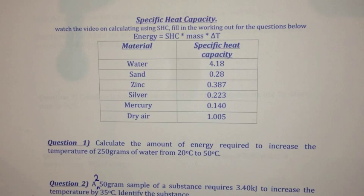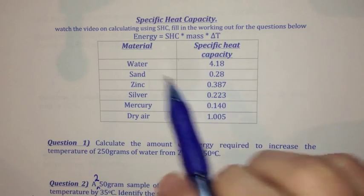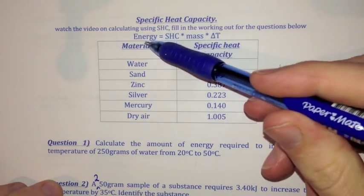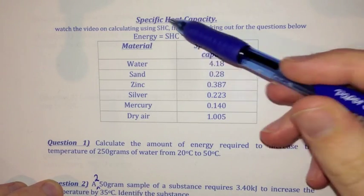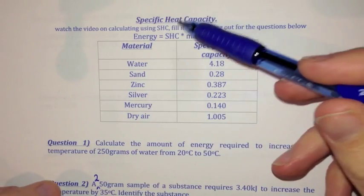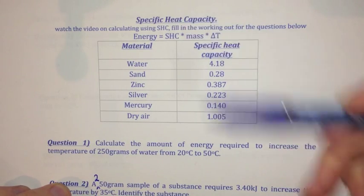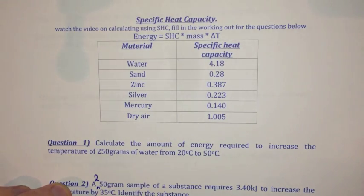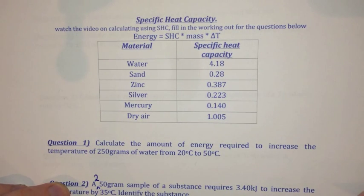Welcome to the chemisode, which is a calculation chemisode where I'm going to go through how to use the specific heat capacity equation to work out some calculations. First of all, you need to know what the specific heat capacity is. The specific heat capacity is the ability to store heat, and it's also the amount of energy required to raise the temperature of a certain amount of substance by one degree Celsius.